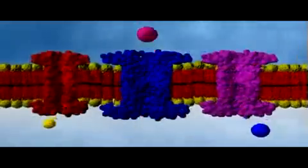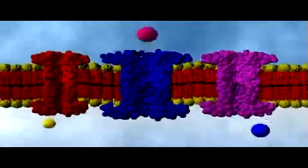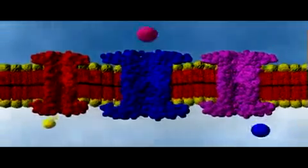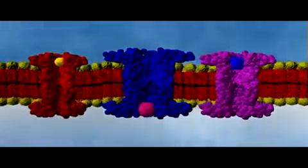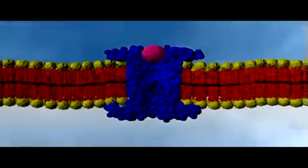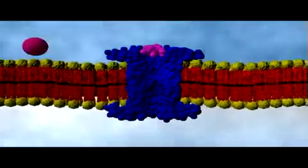Each type of channel protein is typically lined with specific amino acids and has a unique diameter in order to allow only certain ions or other substances to pass. Channel proteins also often have gates which open and close in response to electrical or chemical signals.